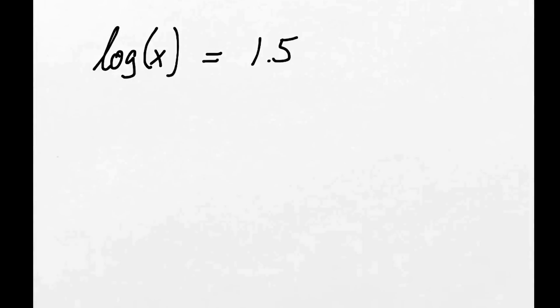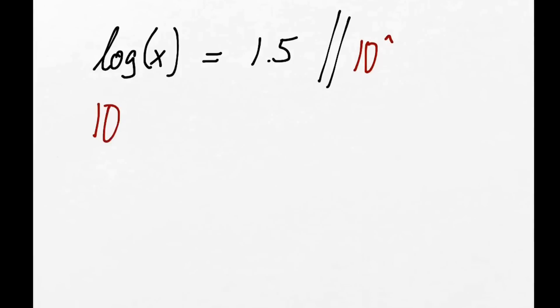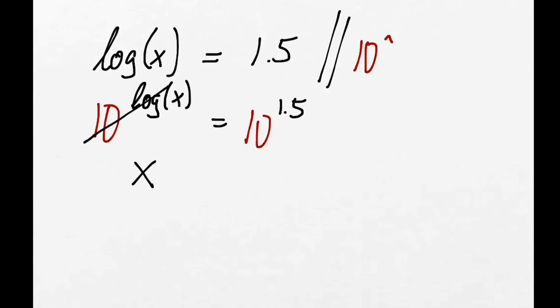Here's another one: log x equals 1.5. Again we know that log and '10 to the power of' eliminate each other, so we know what we need to do — we take both sides '10 to the power of': 10^(log x) equals 10^1.5. The 10 and log cancel out, so we've got x equals 10^1.5, and putting that in the calculator gives us 31.62.